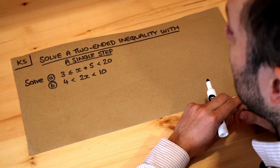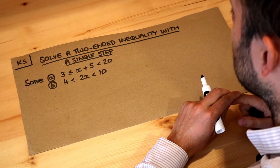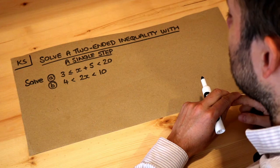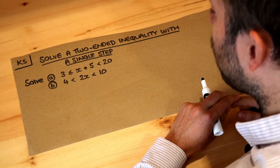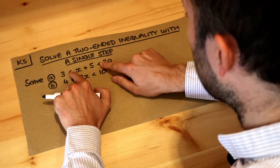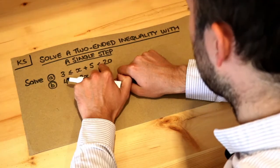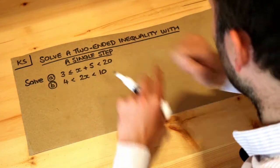Hello and welcome to this Dr. Roster-Mass key skill video on solving a two-ended inequality with a single step. What I mean by two-ended inequality is that we've got two inequalities, so a less than equal to a less than here, within the same line.